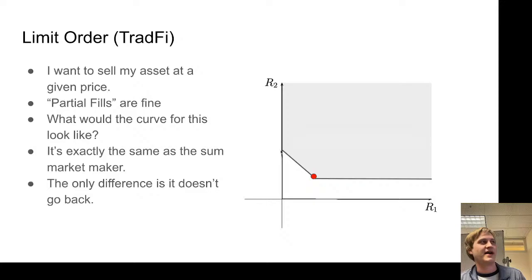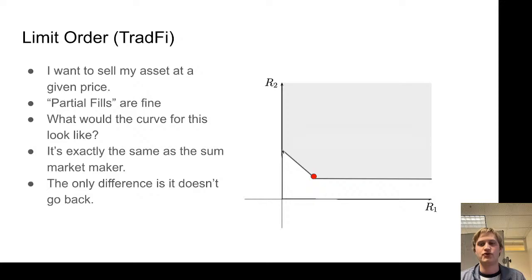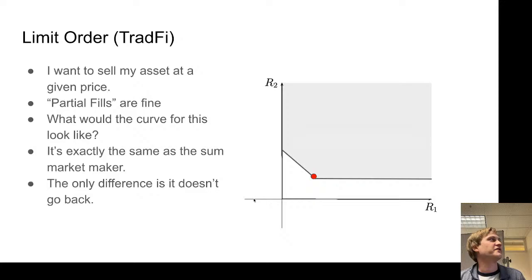If I extended further, the red dot would be all the way up there, meaning all of the money is now in the form of R2 — it holds zero R1 and the limit order has been completed. At that point all you can really do is directly give the smart contract money; it's not really open to any further trade of one thing for another.